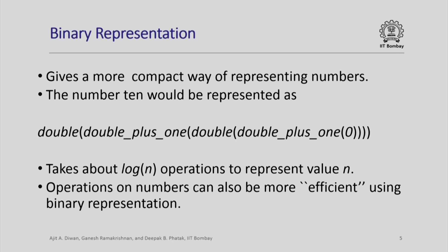This gives a more compact way of representing numbers. For example, the number 10 would be represented as: start with 0, apply double_plus_1, then double, then double_plus_1 again, then double. Informally, double_plus_1 means you double the number and add 1; double just means double the number. Applying double_plus_1 to 0 gives 1, doubling gives 2, double_plus_1 again gives 5 (2×2+1=5), and doubling gives 10. This suggests the binary representation of numbers and takes about log(n) operations to represent the value n.